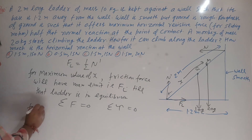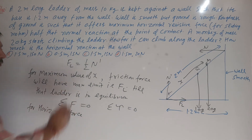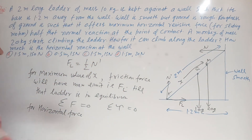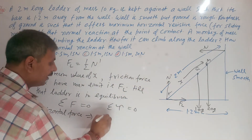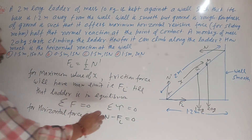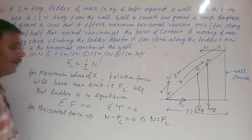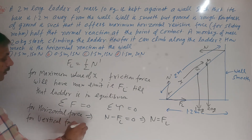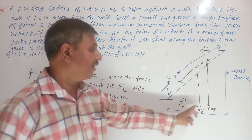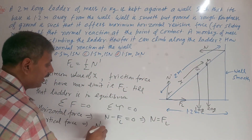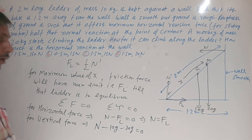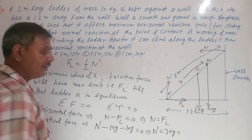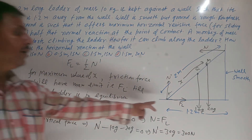For horizontal forces on the ladder: normal reaction from the wall acts leftward and friction force FL acts rightward. So N minus FL equals zero, which means N equals FL. For vertical forces: N' acts upward, and 10G plus 20G act downward. So N' minus 10G minus 20G equals zero, giving N' equals 30G equals 300 Newton.